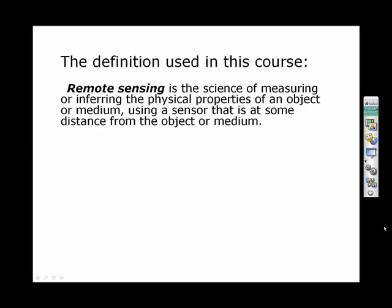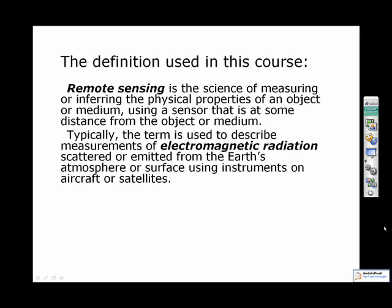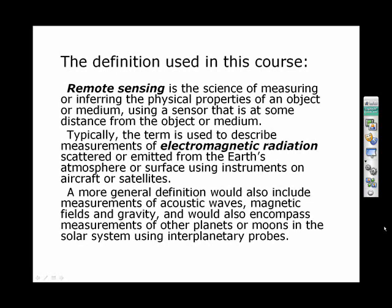My definition is that remote sensing is the science of measuring or inferring the physical properties of an object or medium using a sensor that is at some distance from the object or medium — not in direct contact with it. You're not putting a thermometer into the atmosphere to measure its temperature, but measuring it from some distance. Typically the term describes measurements of electromagnetic radiation — things like light, microwaves, and infrared — that is either scattered or emitted from the Earth's atmosphere or surface, measured using instruments on aircraft, satellites, or other platforms.